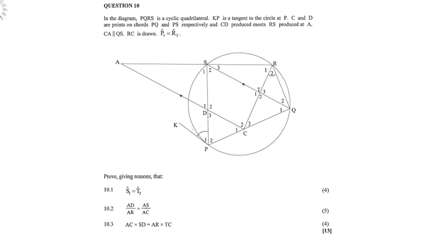P1 is equal to R2. Now you must prove with reasons that S1 equals T2, that AD over AR equals AS over AC, and that AC times SD equals AR times TC.